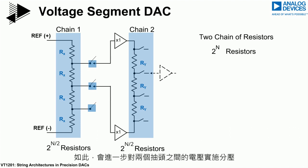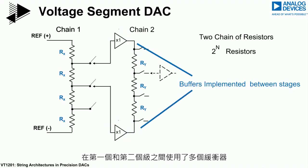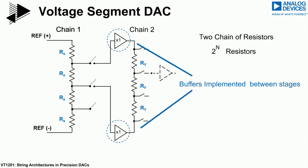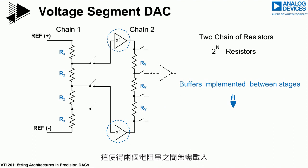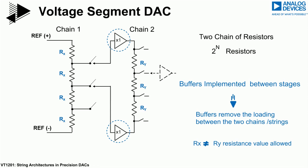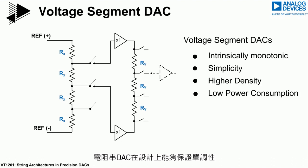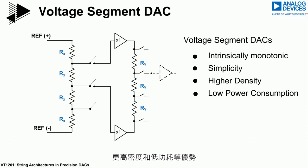The voltage between the two taps is further subdivided, leading to an increase in resolution. A number of buffers exist between the first and second stage, enabling the removal of loading between the two strings, allowing the resistor value in each string to be different. Resistor string DACs are monotonic by design. Additional benefits include simplicity, higher density, and low power consumption.